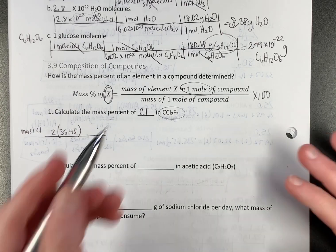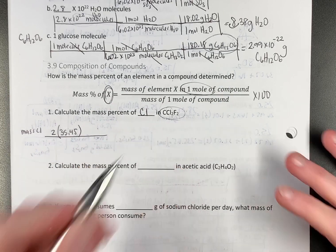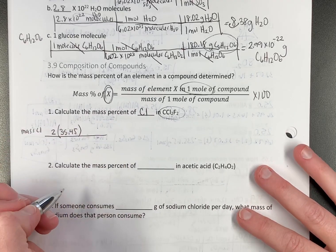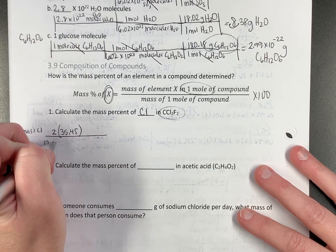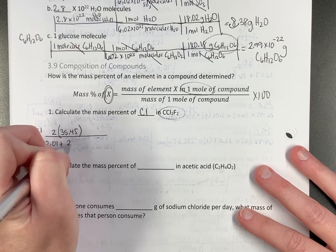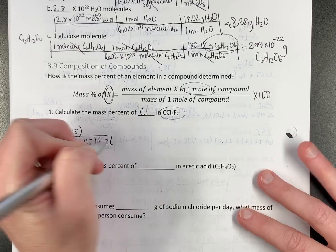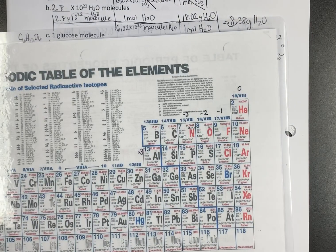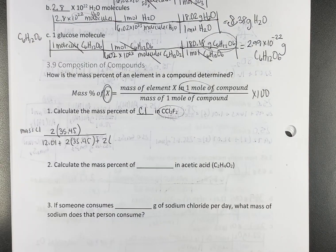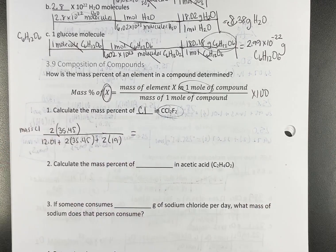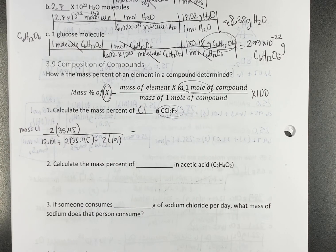So this is going to be our mass of chlorine. And you have to be careful here, look at your formula, because there's two of them. It's not always just one. And then we're going to go over our total molar mass, which will be 12.01 plus two times 35.45 plus two times whatever fluorine is, 19. That's how I set it up.